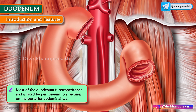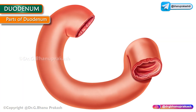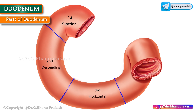The duodenum is divided into four parts: the superior part (first part), the descending part (second part), the horizontal part (third part), and the ascending part (fourth part).